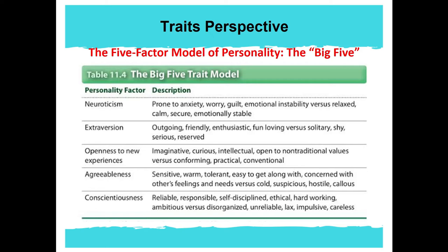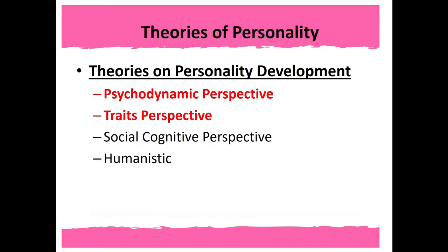Agreeableness is associated with better mental health because those individuals have lower levels of neuroticism and higher levels of extroversion and agreeableness. Remember that these personalities are not fixed — conscientiousness actually increases in adulthood and is associated with living a healthy life and longevity. That concludes the traits perspective.